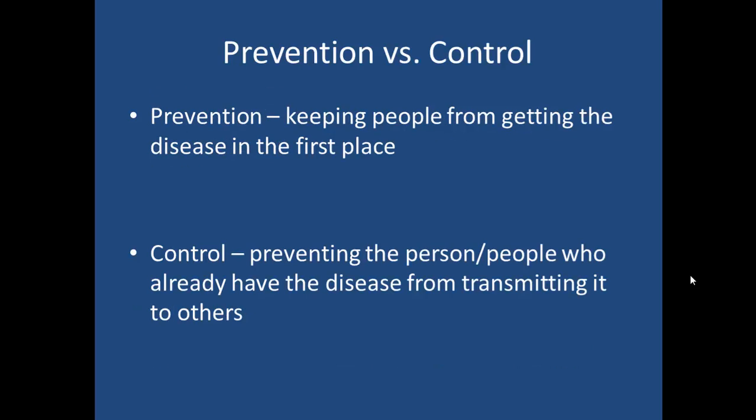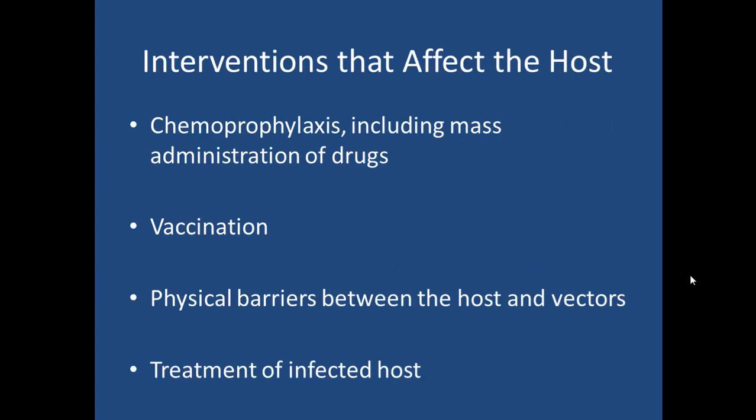What is the difference between prevention and control? Prevention is actually preventing people from getting the disease — keeping people from getting it in the first place — while control is preventing the disease from spreading from person to person. So if a person is infected, control prevents another person from getting infected.